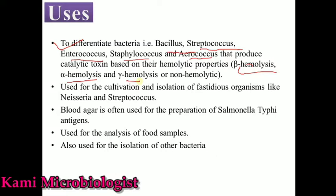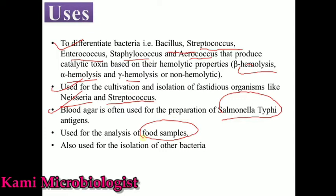We also use this media for the cultivation or isolation of Neisseria, as well as Streptococcus pyogenes and Streptococcus equisimilis. This media is also used for the isolation of Salmonella, especially Salmonella typhimurium antigen. Moreover, we use this media for food analysis — if we want to check a food sample for bacteria like Clostridium perfringens and other foodborne pathogens. This media is also used for isolation of E. coli, Pseudomonas, Haemophilus, and Actinobacter, though it doesn't mean it's used for identification purposes of all those bacteria. For identification, it's mostly used for Streptococcus, Enterococcus, and Staphylococcus.